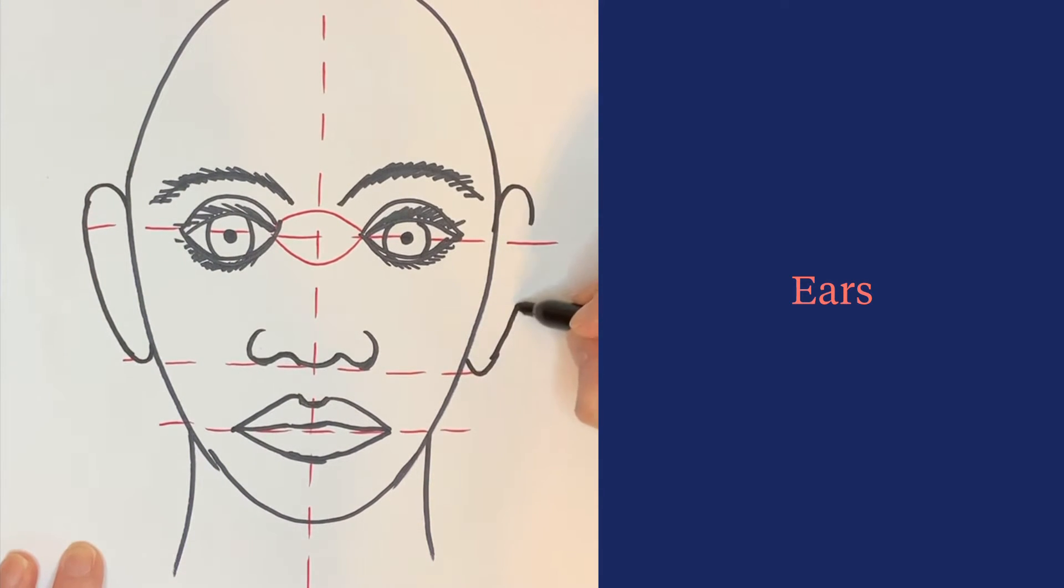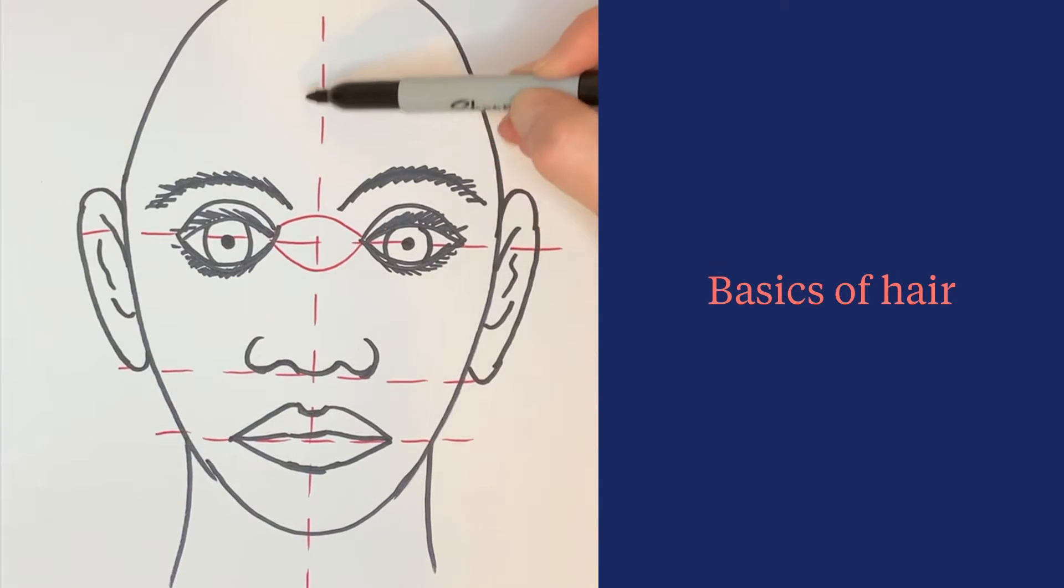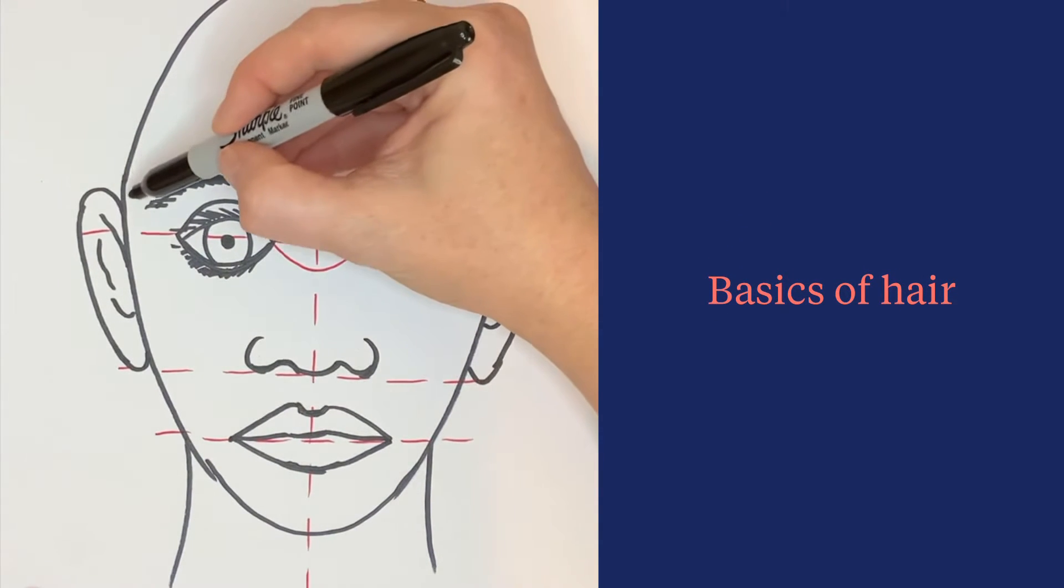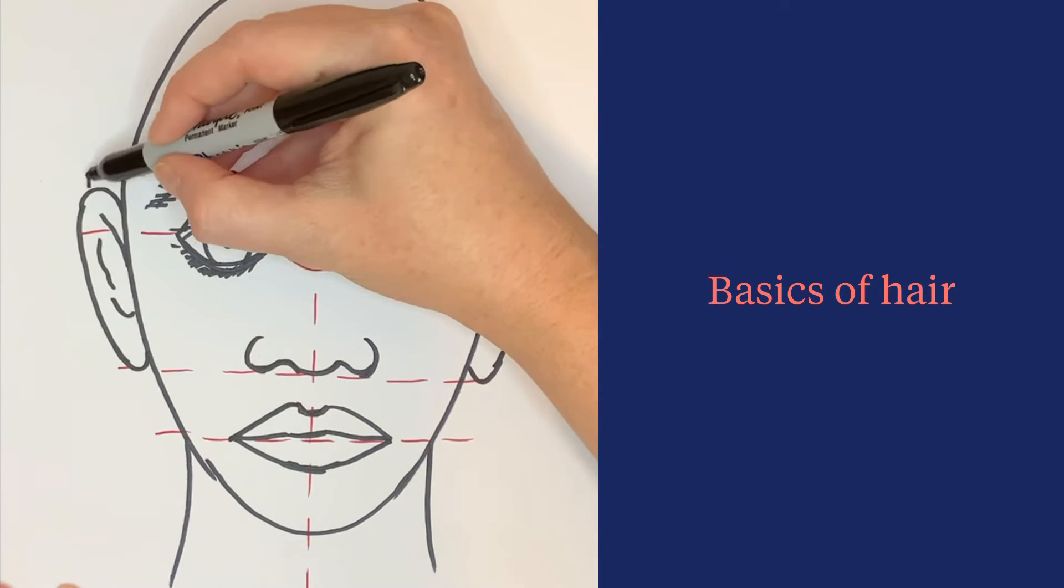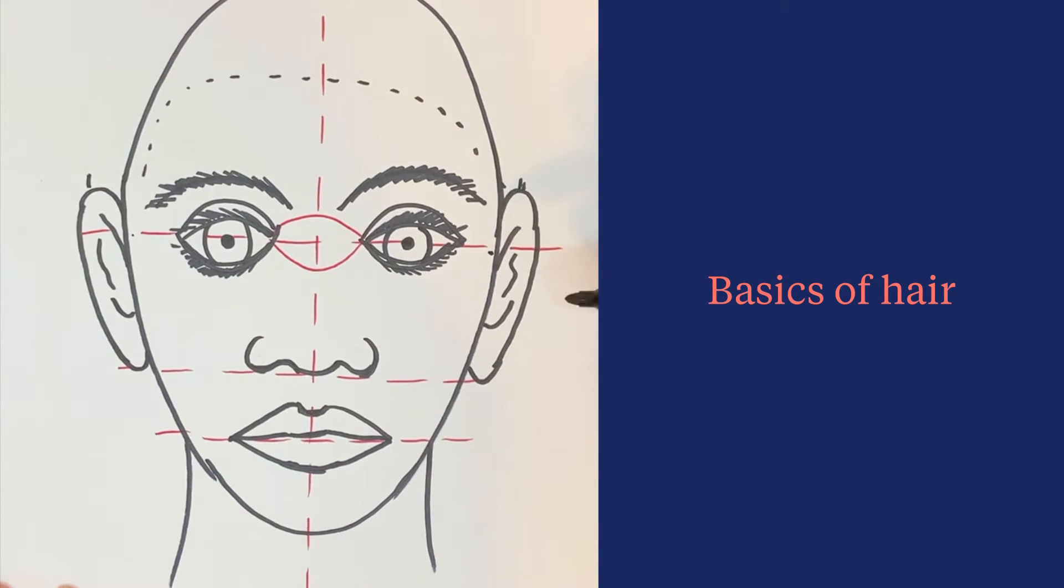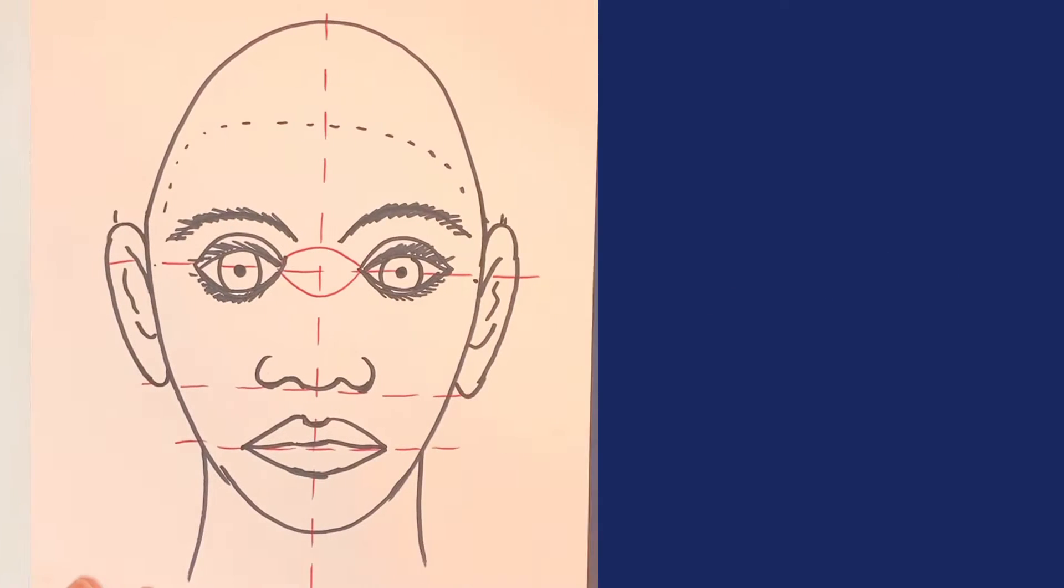The basics of hair: your hair should be inside and outside the oval shape of your head. Go up a little ways for your forehead, and come out at least as far as where your ears are.